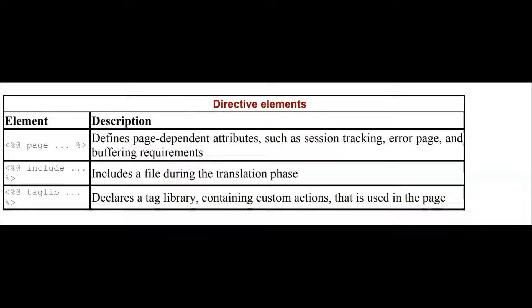The first elements are the directive elements, shown in this table. Directive elements specify information about the page itself that remains the same between requests — for example, whether session tracking is required, buffering requirements, and the name of the page used to report errors. The tag starts with '<%@'. If you have 'page', it defines page-dependent attributes such as session tracking, error page, and buffering requirements. 'include' includes a file during the translation phase, and 'taglib' declares a tag library containing custom actions used in the page. The tag closes with '%>'.